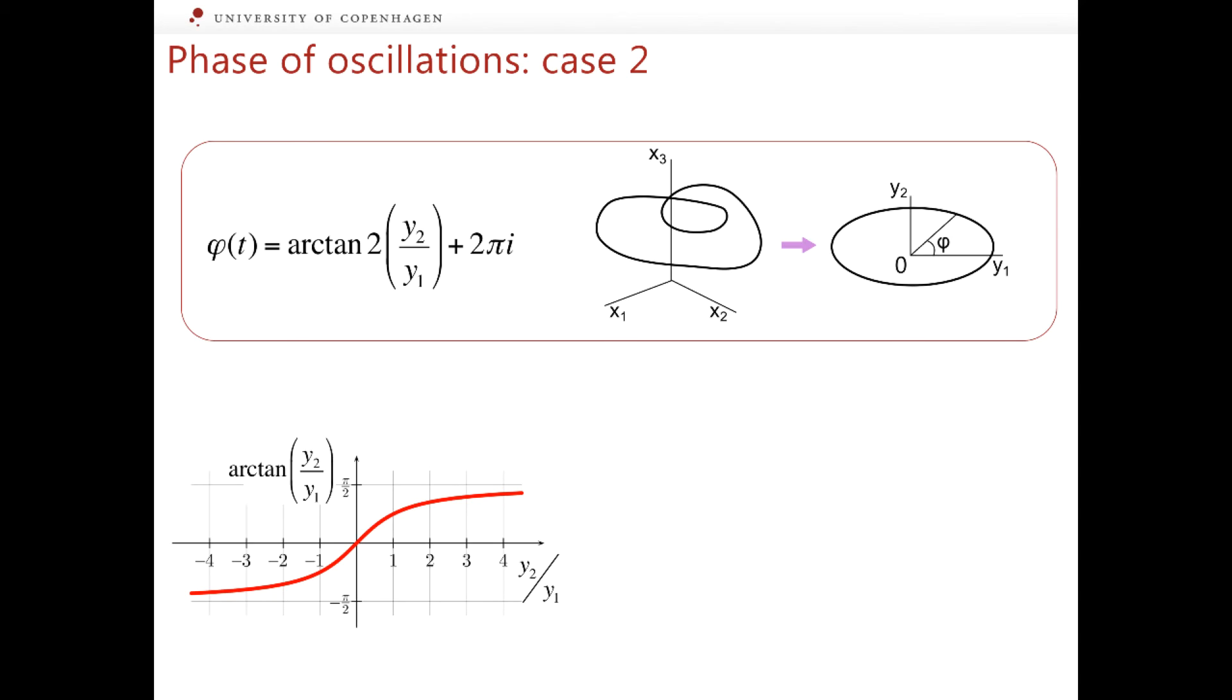The usual arctan function of an argument y_2 over y_1 takes values from minus π over 2 to plus π over 2. The use of this function would be inappropriate here because the difference between the largest and the smallest values of arctan is only π. But we need such a function which would take values between minus π and plus π to ensure that within a single cycle the phase grows by 2π. This is achieved by using the extended arctan, arctan2.